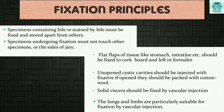So what are the fixation techniques for different types of tissues? First of all, specimens which contain bile or are stained by bile must be fixed and stored apart from others. The specimens undergoing fixation must not touch other specimens. Flat flaps of tissue like stomach, intestine, etc. should be fixed to a cork board and left in formalin so that they are not crumpled and irregularly fixed.